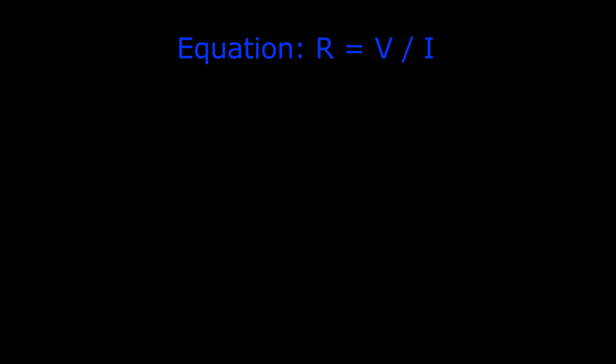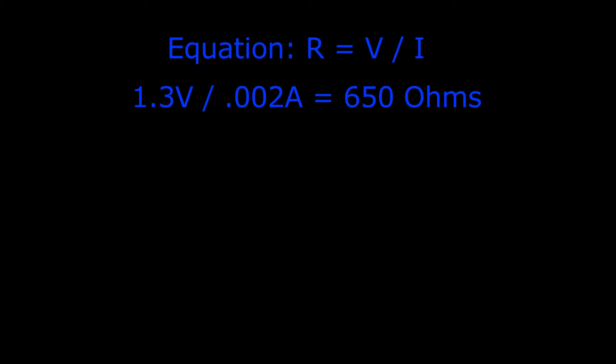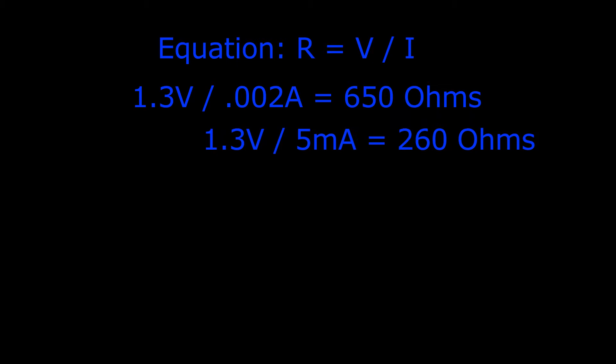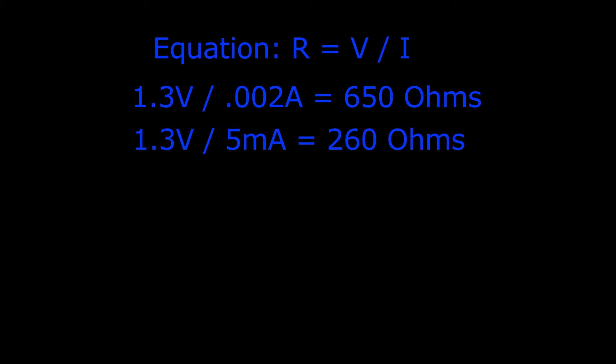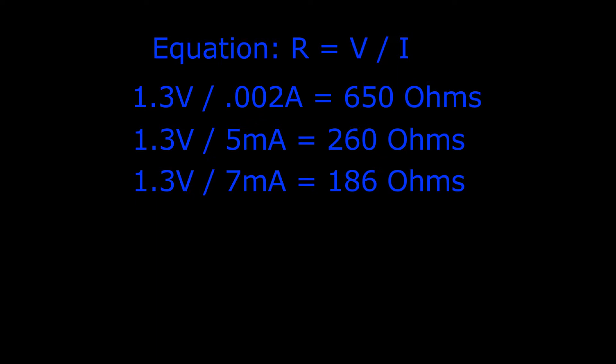Using R equals V over I: for 2 milliamps, 1.3 volts divided by 0.002 amps equals 650 ohms. For 5 milliamps, 1.3 volts divided by 0.005 equals 260 ohms. For 7 milliamps, 1.3 volts divided by 0.007 equals 186 ohms. Since I don't have a 186-ohm resistor but do have a 180-ohm resistor, using I equals V over R: 1.3 volts divided by 180 ohms equals 7.2 milliamps.